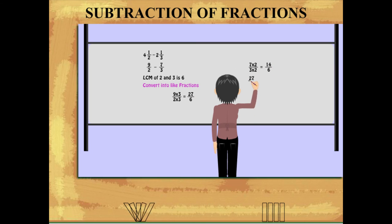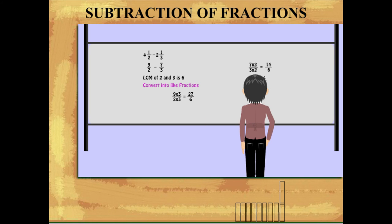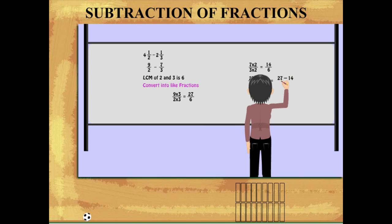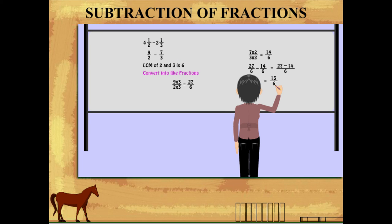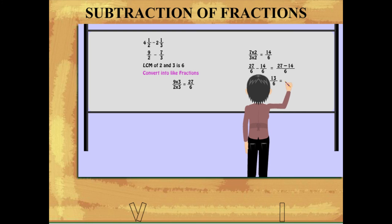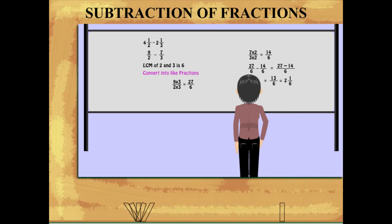Finally, Teacher Nancy subtracts 14 from 27 upon 6 and gets 13 upon 6. She converts this into proper fraction and writes 2 whole number and 1 upon 6.